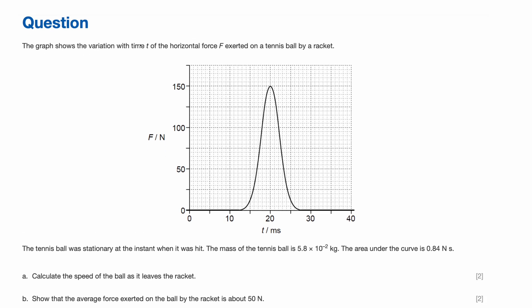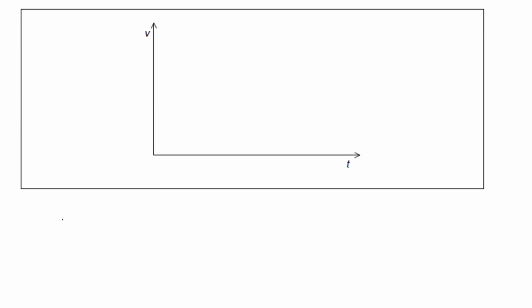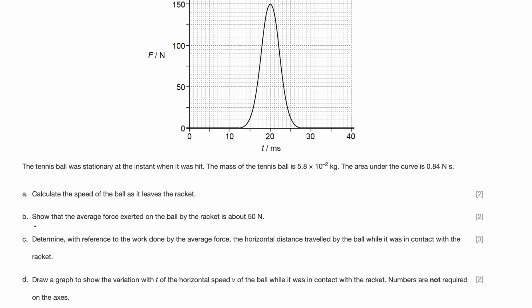Let's get started. The graph shows the variation with time of the horizontal force F exerted on a tennis ball by a racket. The tennis ball was stationary at the instant when it was hit. The mass of the tennis ball is 5.8 × 10⁻² kg. The area under the curve is 0.84 Ns. Calculate the speed of the ball as it leaves the racket. That's part A.